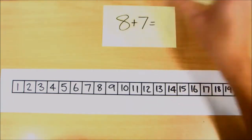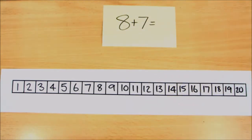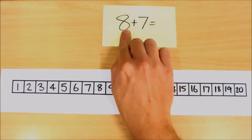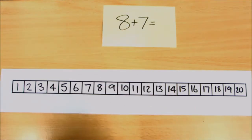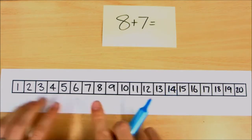So our first question here is eight add seven, so eight plus seven. Like with the other videos, we'll look at the first number and what we'll do this time is we'll color in eight squares.